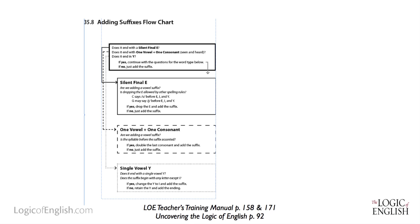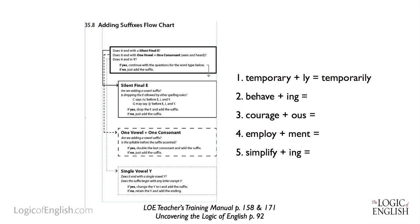Let's begin with the word temporary and add the suffix -ly. Does it end with a silent final E? No. Does it end in one vowel and one consonant? No. Does it end in a Y? Yes. Does it end with a single vowel Y — not AY or OY, but just a Y? Yes, temporary ends in a single vowel Y. Does the suffix begin with any letter except I? Yes. If yes, change the Y to I and add the suffix — giving us temporarily.